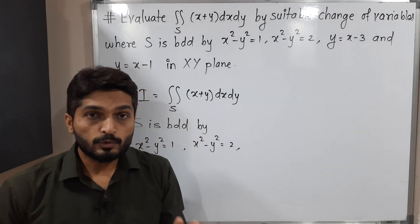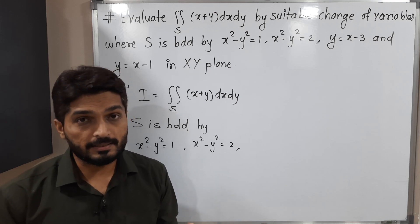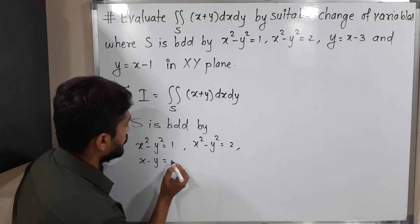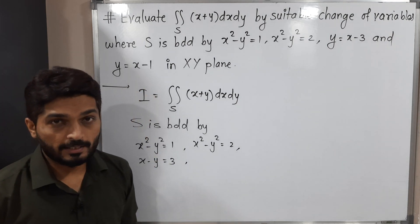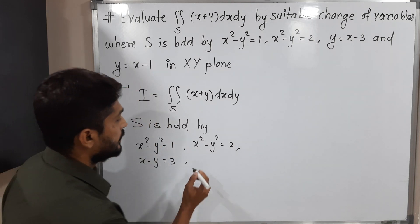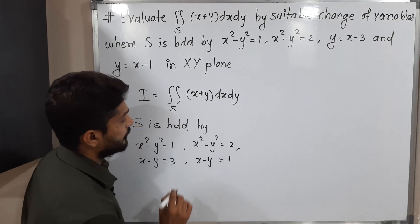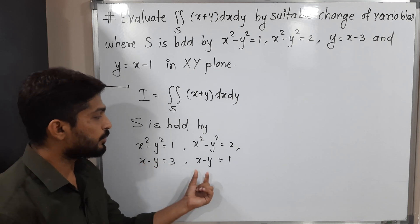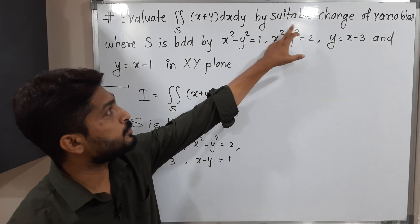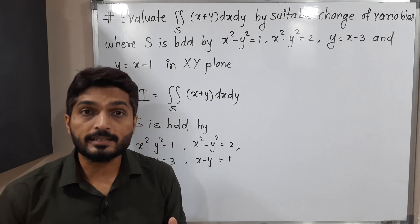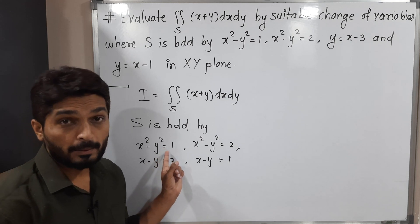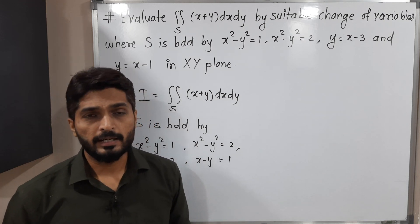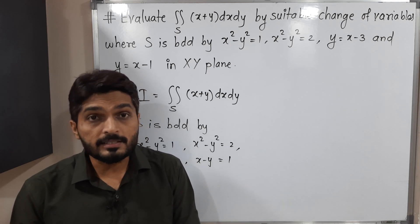We have to solve this problem by a suitable change of variables. Rewriting the last two equations: shifting y to one side gives x - y = 3 and x - y = 1. This brings out the pattern x - y appearing across the equations. The region involves two hyperbolas and two straight lines in the xy-plane, making it very complicated to solve directly.